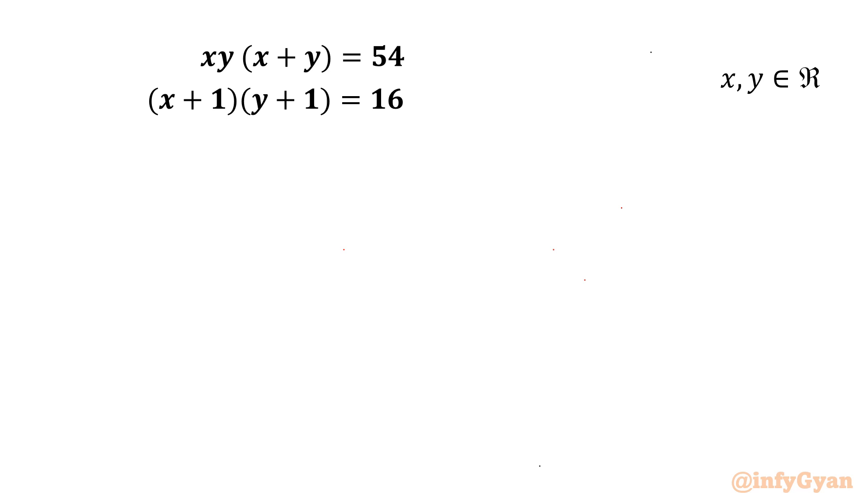Welcome to Infigyan my dear friends. In this video we are going to solve one very interesting question on system of equations. We have two equations: xy times (x+y) equals 54 and (x+1) times (y+1) equals 16. We have to find out real solutions. So let's get started.